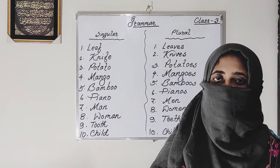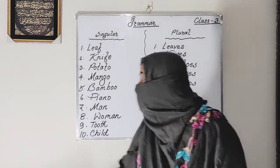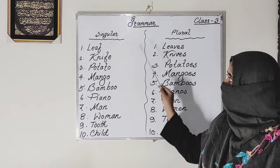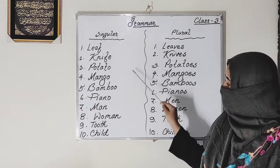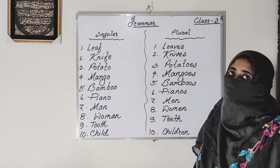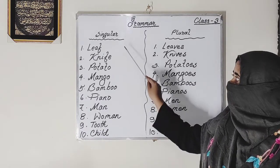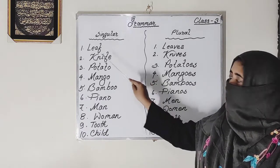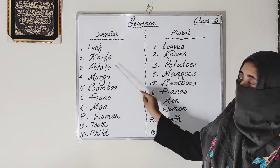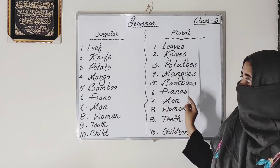Ok dear student, let's start. Look at the board. I have written some singular number and plural number here. You should read with me. Singular number: leaf — plural: leaves. Singular: knife — plural: knives.